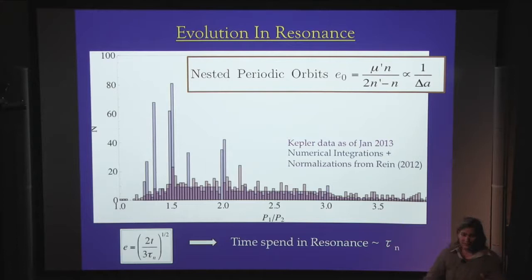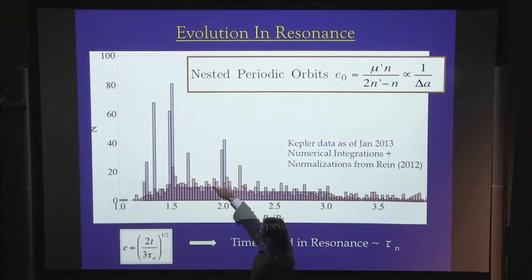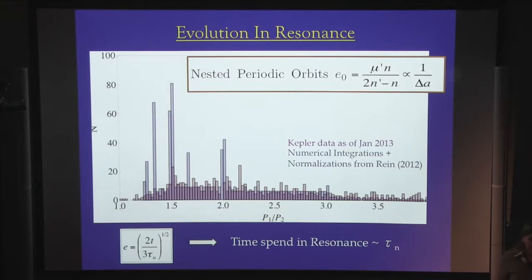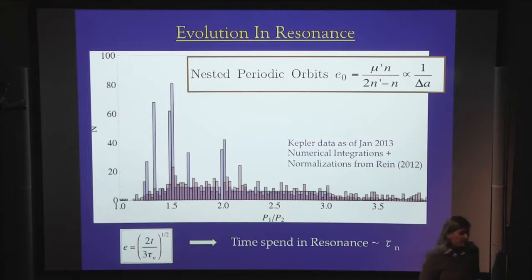That is not at all what we see in the Kepler data — drawn here for comparison in a wine color. So there's something we are missing. One of the conclusions people have drawn from this is that these planets must have formed in situ, because if they had migrated in the disk, you should have all these resonant pairs that you don't see.